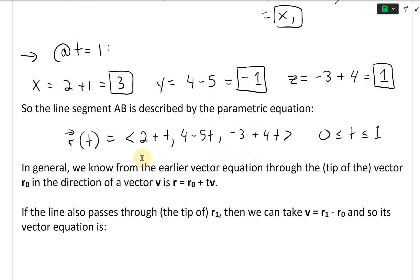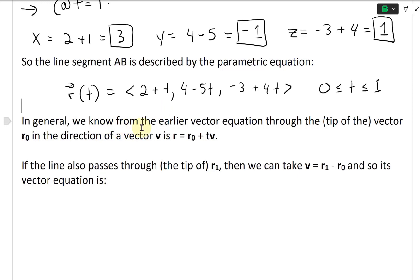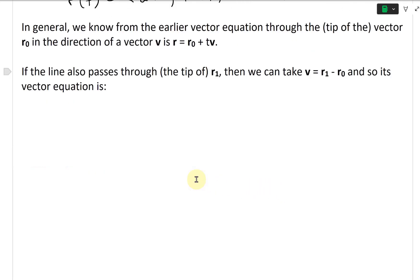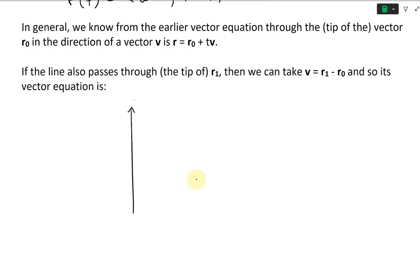Let's generalize this. In general, the vector equation of a line through the tip of vector R₀ in the direction of vector V is R = R₀ + tV. If the line also passes through the tip of vector R₁, then we can set V = R₁ - R₀.